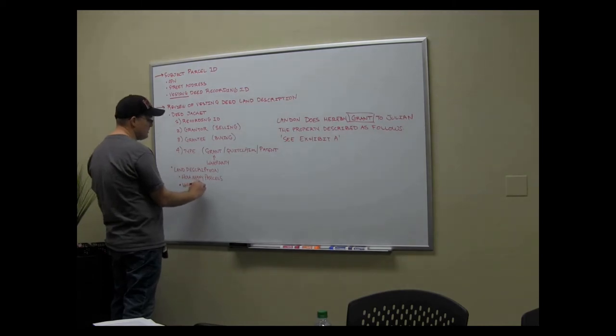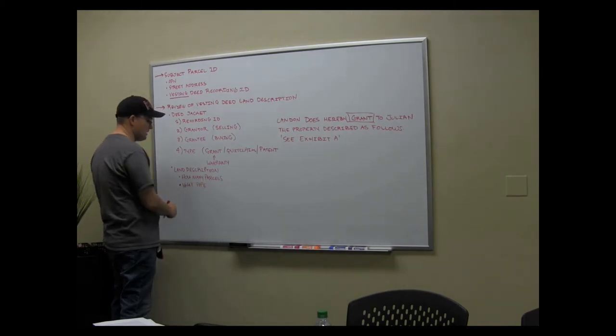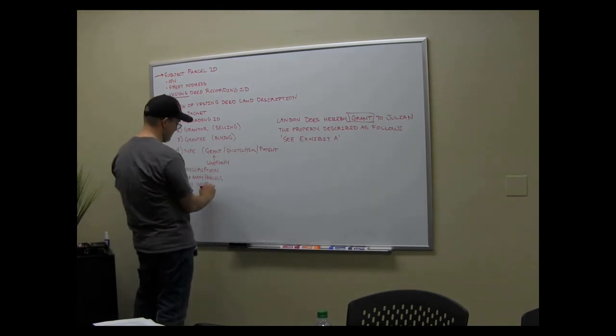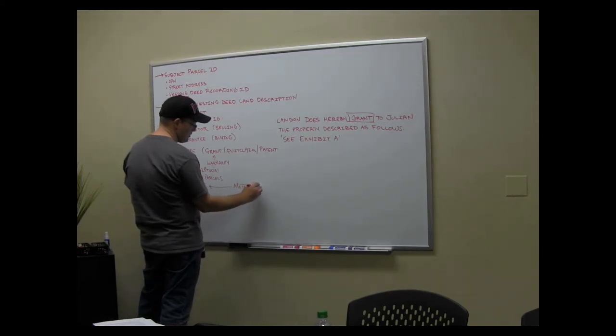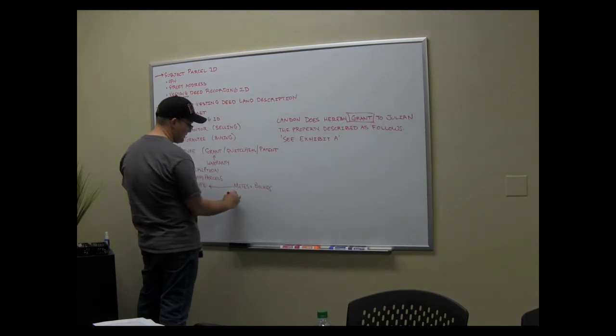And then tell me what type of land description is it. And there's a few basic types. And if you don't know, you just come get me or Matt. We can tell you. Or Will can tell you. So what type? So metes and bounds. We're not going to get into the details today, but there's metes and bounds. There's bounds only.